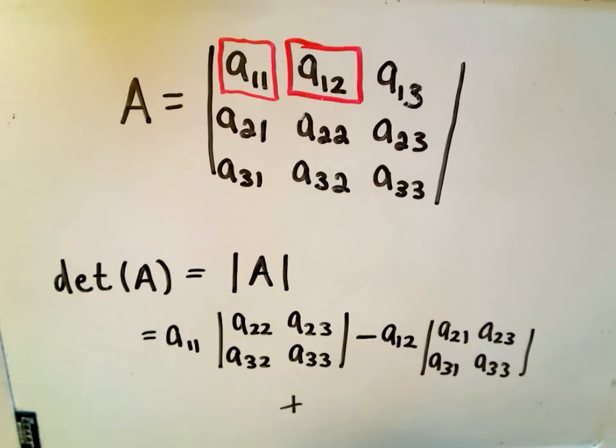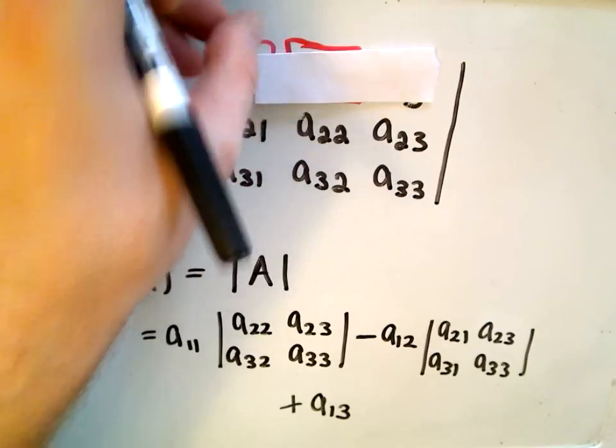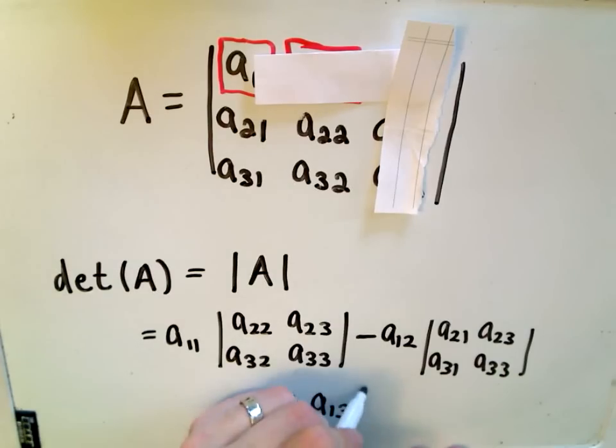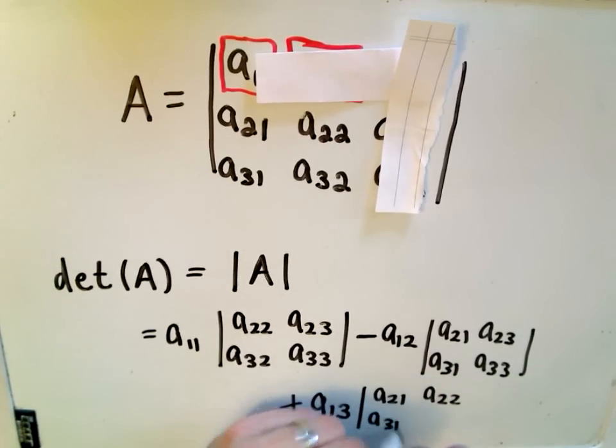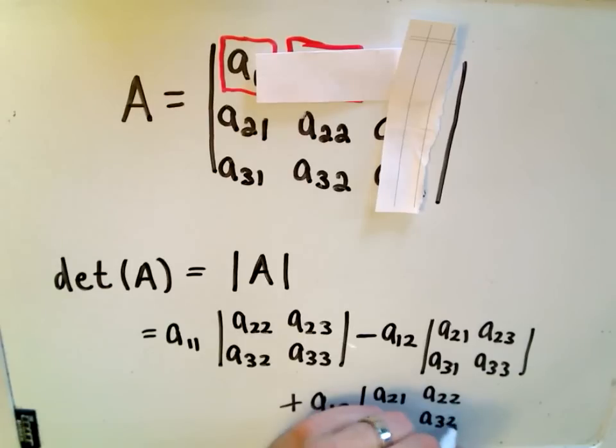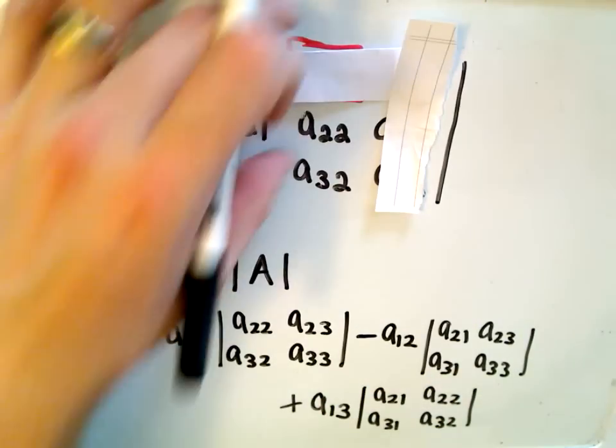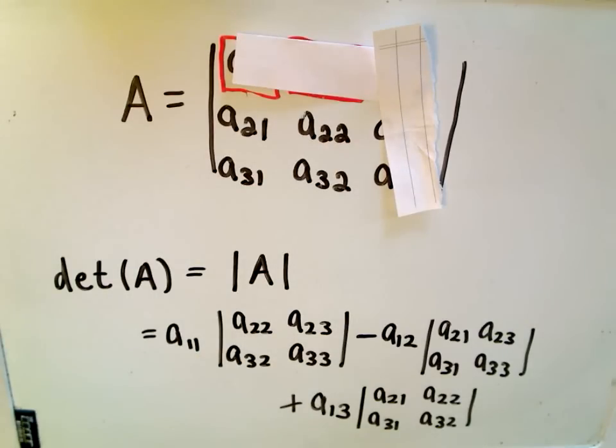Then we go to the last one. The same thing: I look at A₁₃, imagine covering up that row and column, and I'm left with the smaller determinant A₂₁, A₂₂, A₃₁, and A₃₂. This is the basic formula for computing a 3x3 determinant. Pretty tedious, but let's see if we can do one here.